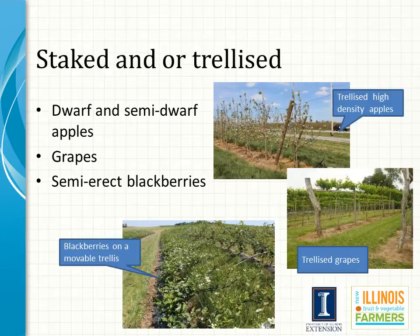Due to poor anchorage or brittle graft unions, many grafted dwarf apple trees require support in the form of a trellis system and/or an individual post. Other fruit crops that require a trellis are semi-erect blackberries and grapes.